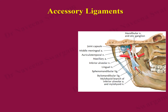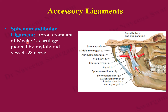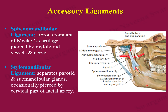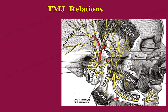The sphenomandibular ligament lies medial to the joint capsule and extends from the spine of the sphenoid to the lingula of the mandibular foramen, where it is pierced by the mylohyoid nerve and vessels. It is the remnant of Meckel's cartilage. The stylomandibular ligament extends from the tip of the styloid process to the angle of the mandible, separating the parotid gland above and the submandibular gland below. Both ligaments prevent excessive forward movement or protrusion of the mandible.